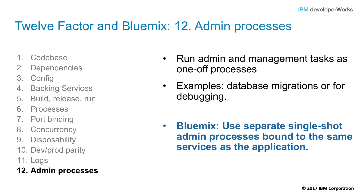Factor number 12: admin processes. You should run your administrative or management tasks as one-off processes — for example, loading data into a backing service that's just been created. You don't want to create admin processes that may need to be repeated many times and aren't well encapsulated as code themselves. It's very important to create a separate process, even if it's a one-off, to do a particular task. In Bluemix, you can create these admin processes separately and have them access the same credentials by binding them to the same services that the application is bound to. And that covers our overview of the 12-factor app methodology.